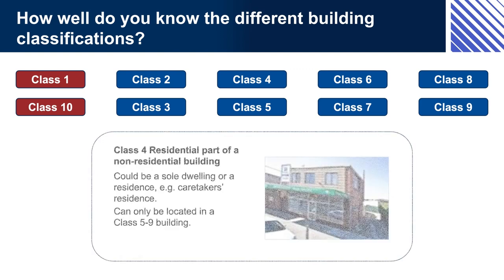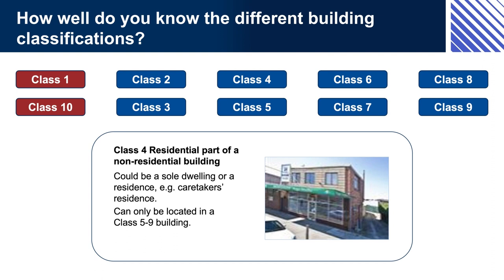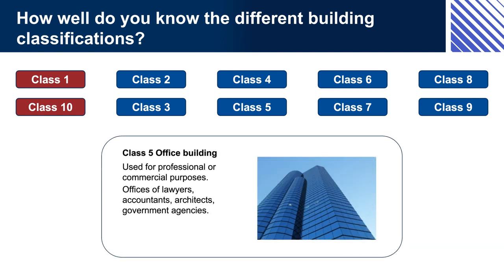Class 4: residential part of a non-residential building. Could be a sole dwelling or a residence, e.g. a caretaker's residence. Can only be located in a Class 5 to 9 building. Class 5: office building used for professional or commercial purposes — offices of lawyers, accountants, architects, government agencies.